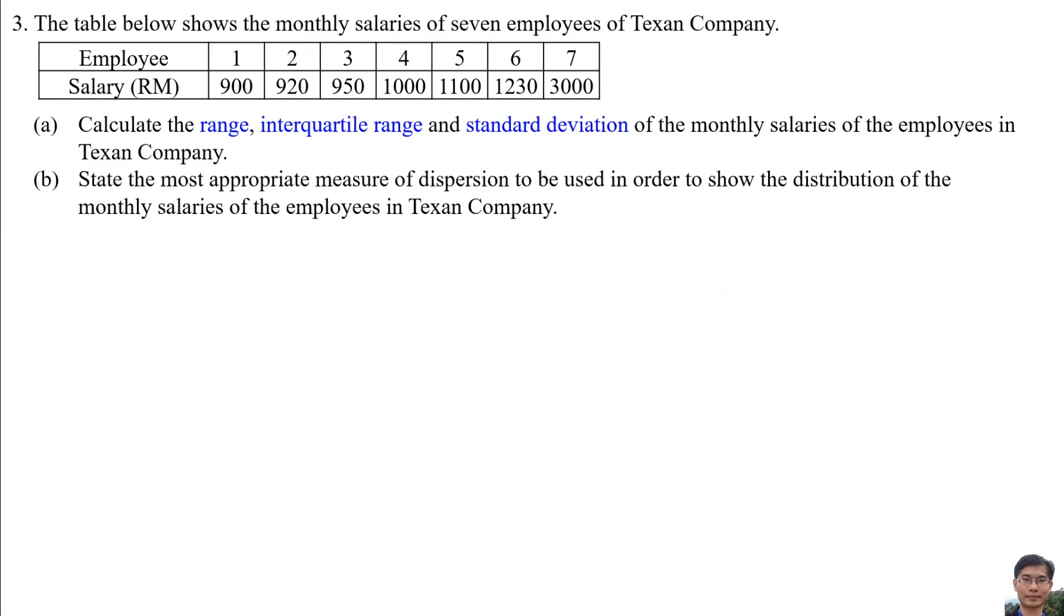Number 3: The table below shows the monthly salaries of seven employees of Texan Company. A. Calculate the range, interquartile range, and standard deviation of the monthly salaries of the employees in Texan Company. Range is equal to the maximum salary, 3000, minus the minimum salary, 900. So the range is equal to 2100.